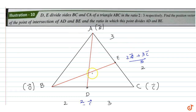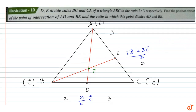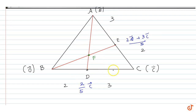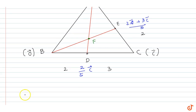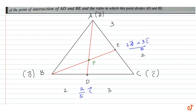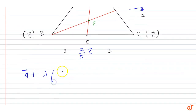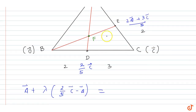Now for the line AD equation, if both points are on the intersection, let's say the point is F. So the coordinates of F in the form of line AD will be: A vector + lambda times (D vector minus A vector), which is A vector + lambda times (2/5 C vector minus A vector).